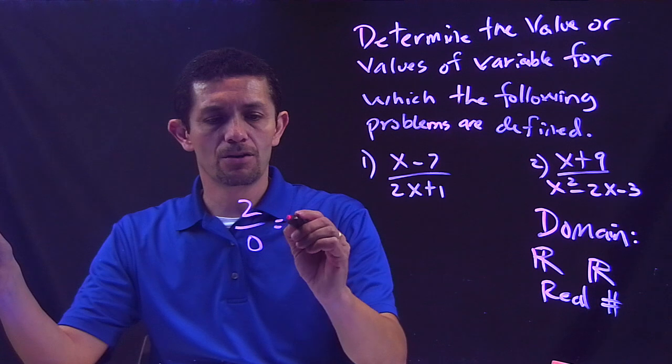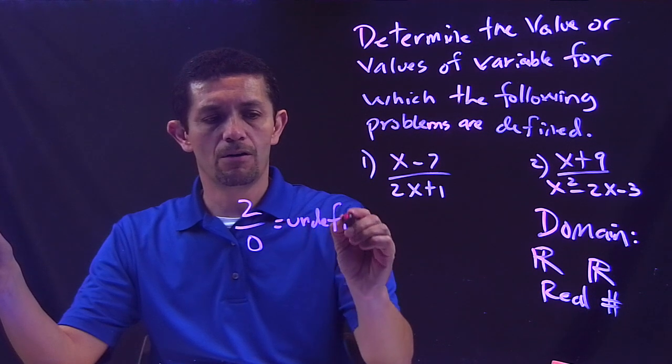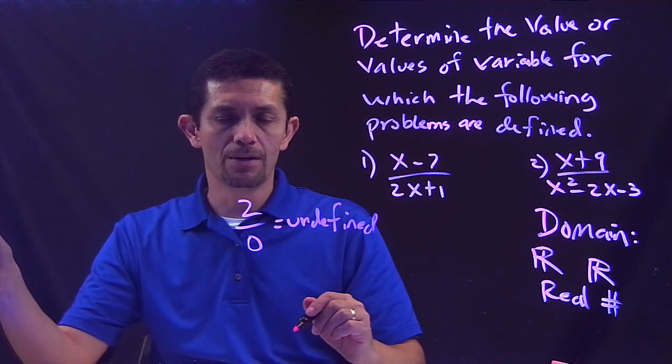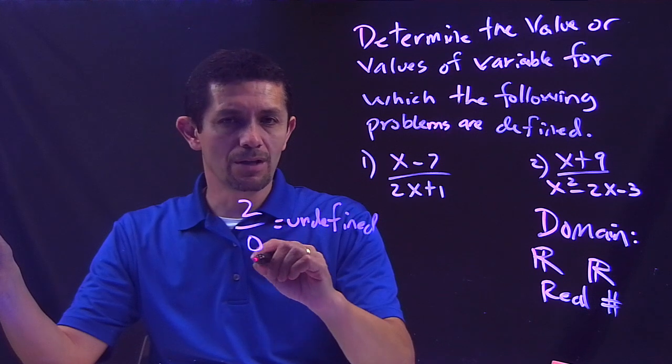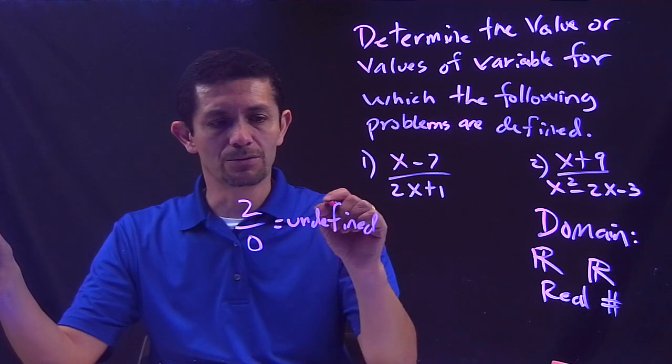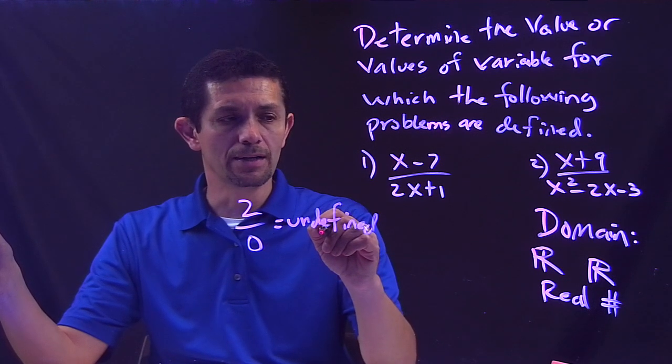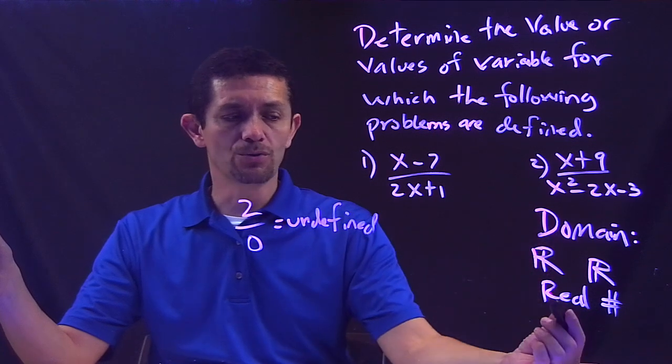This is what I'm saying: 2 divided by 0, that's undefined. So I don't want to have a zero on the denominator. I don't want that because then my function will be undefined.